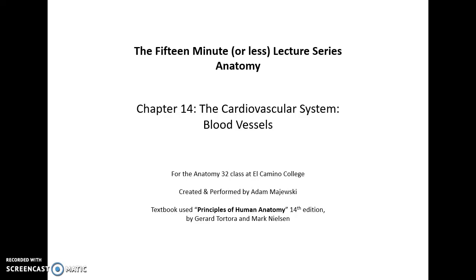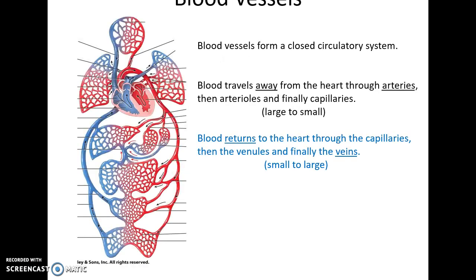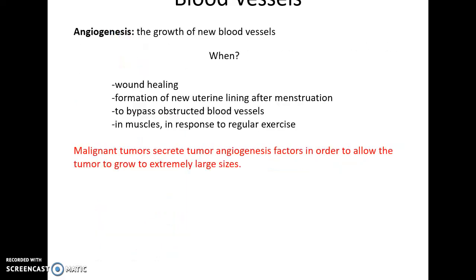Welcome to the 15-minute-or-less lecture series: anatomy chapter fourteen, the cardiovascular system. Blood vessels form a closed circulatory system, all in a big circle flowing in and out of each other. Blood travels away from the heart through arteries, then passes through tiny arterioles and finally microscopic capillaries, going from large to small. The blood then returns to the heart through venules and finally the veins, going from small to large.